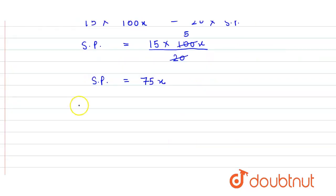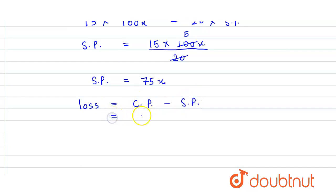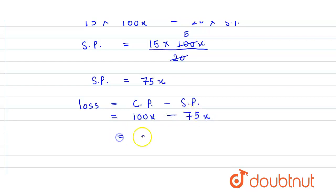Now we find out the loss. Loss equals cost price minus selling price, so that is 100x minus 75x, which gives us 25x.